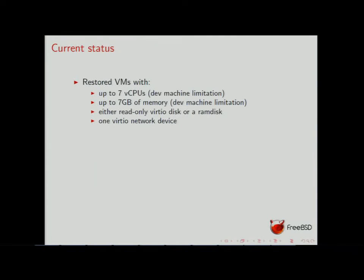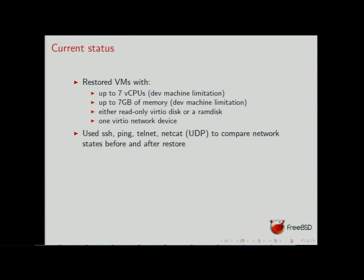Current status: we managed to restore VMs with up to seven vCPUs and up to seven gigabytes of RAM — limited by our test host having only eight physical CPUs and eight GB of RAM. We use a read-only virtual disk or RAM disk since we don't have disk save/restore yet, and only one virtual network device. We tested with SSH, ping, and telnet from the virtual machine while saving state and then restoring, and the connection is preserved.